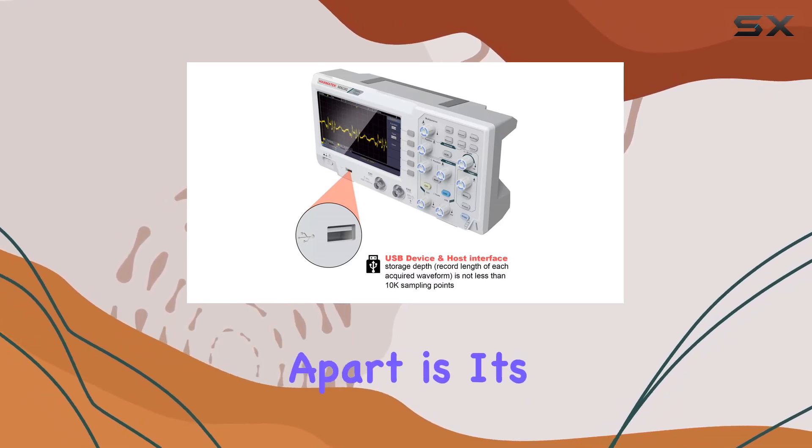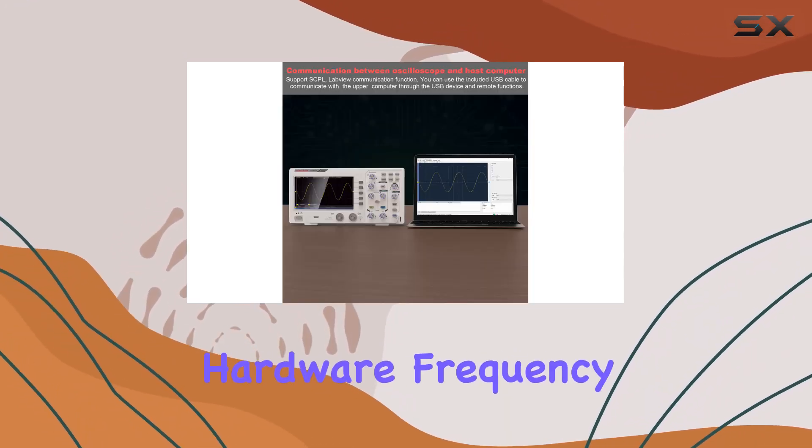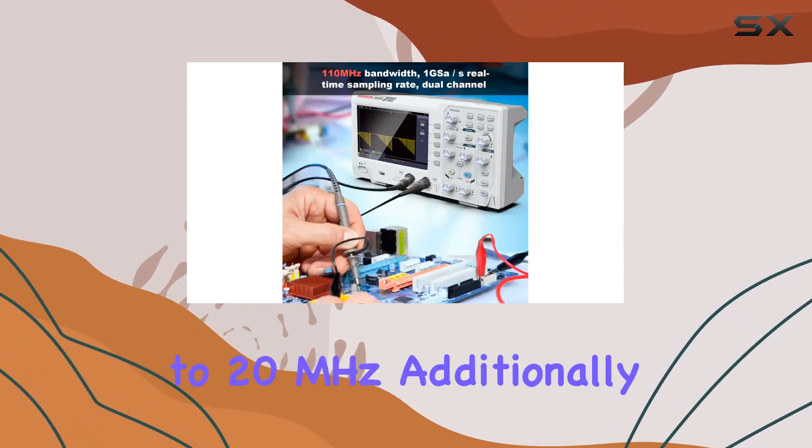What sets this oscilloscope apart is its built-in 6-digit hardware frequency meter, covering a frequency range of 2Hz to 20MHz.